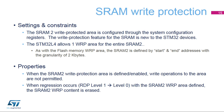The write protection area of the SRAM2 is configured through the system configuration registers. Only one area can be set using the start and end address registers, with an address granularity of 2 kilobytes. As with the flash memory, write operations on the protected area are not permitted. When regressing from RDP level 1 to level 0, the entire content of SRAM2 is erased.